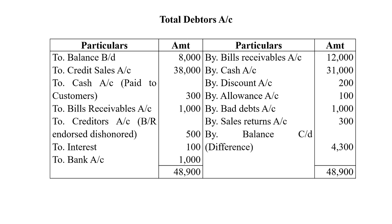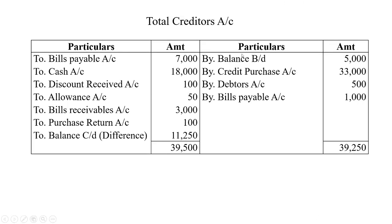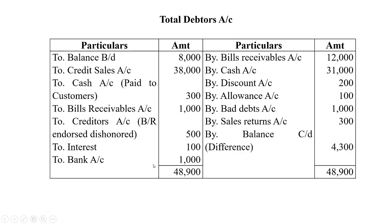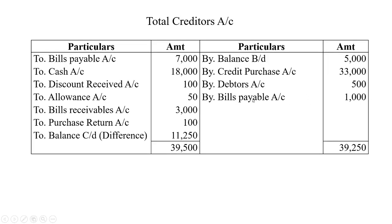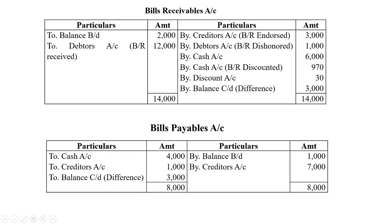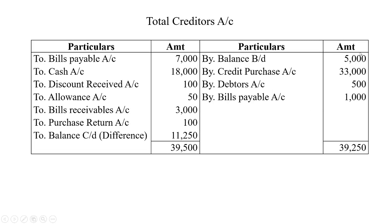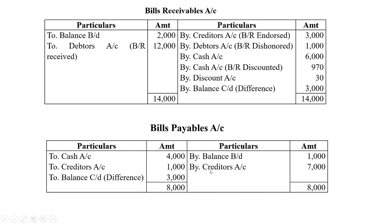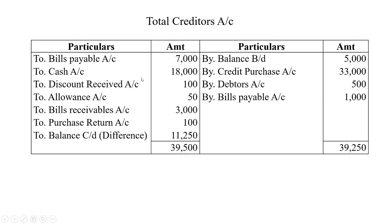For the total creditors account: opening balance — balance brought down — 5,000 rupees. Credit purchases during the year — 33,000 rupees. By debtors account (bills receivable endorsed) — 500 rupees. Bills payable issued — 7,000 rupees. Cash paid to creditors during the year — 18,000 rupees.